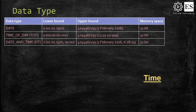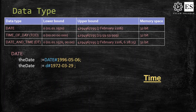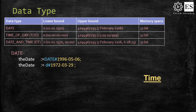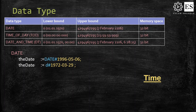In some applications it is more convenient to represent time in the PLC program as we represent it in our daily activities as humans, by using the DATE, TIME_OF_DAY, or DATE_AND_TIME data types. The DATE data type, as the name implies, lets you specify dates. When setting a value to a DATE variable, you write D or DATE followed by a hashtag and then the value. The date declaration must be specified in the format year-month-day. Internally TwinCAT treats date values like DOUBLE WORD — the time is specified in seconds from the 1st of January 1970.